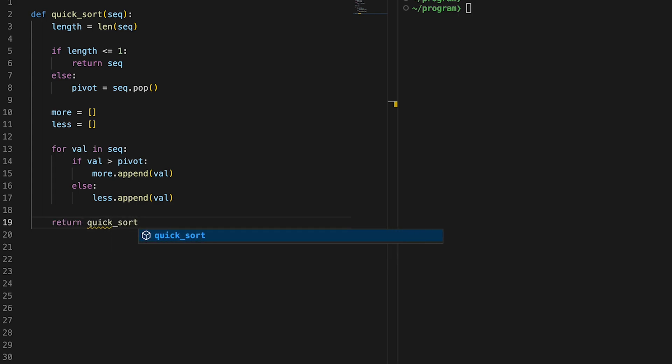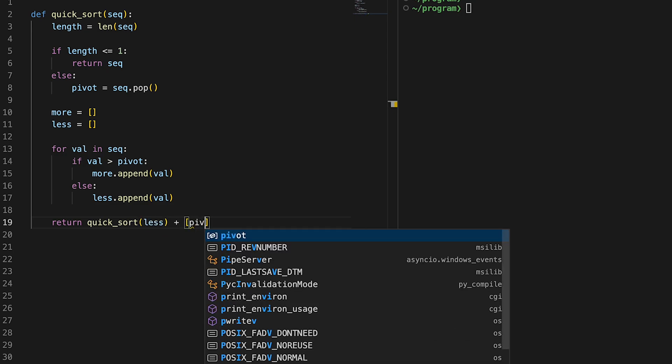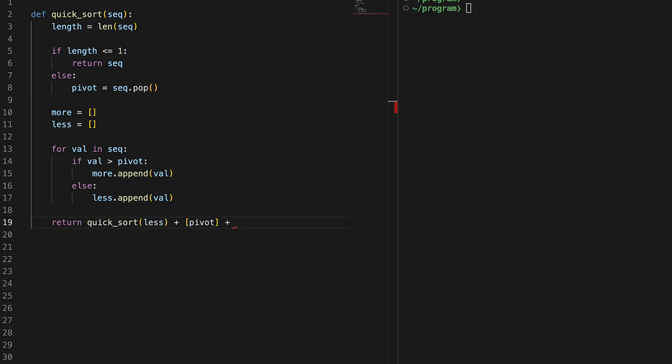Return quicksort of less plus the pivot plus quicksort of more. That's it.